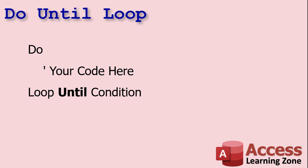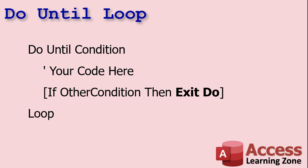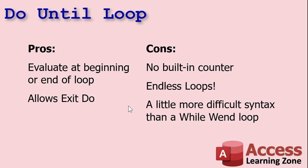You can evaluate a do until at the bottom or the top of the loop, just like with a do while. For example: do, loop while X is less than 10 — or do, loop until X is greater than or equal to 10. It's all a matter of how you want to write it. And just like the do while loop, the do until also has the exit do command. So if in the middle of the loop you decide you want to get out, just say exit do. Do until X is greater than or equal to 10, and right in there if it's divisible by five, exit out of the loop. Pros and cons are pretty much exactly the same as do while — it's the same loop, it just reads differently.